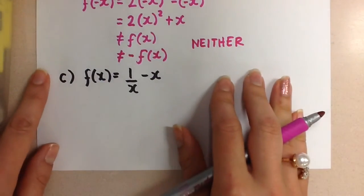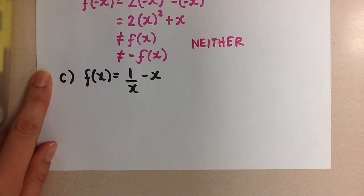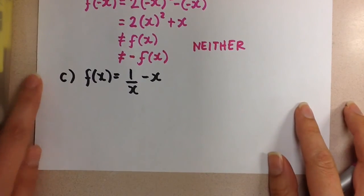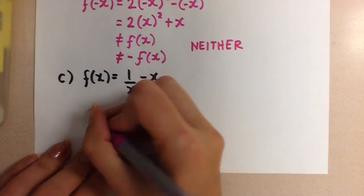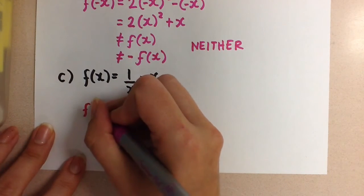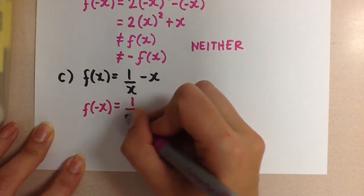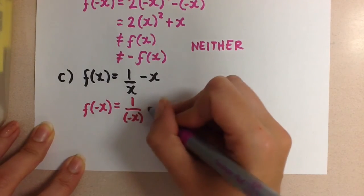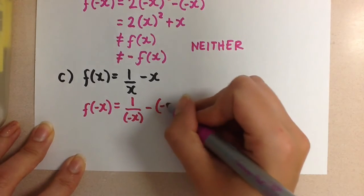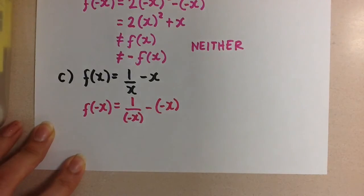And let's look at our last one. f(x) = 1/x - x. So we start off the same way again. f(-x). And substitute -x everywhere that there is an x.